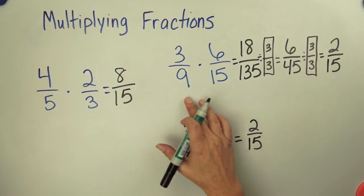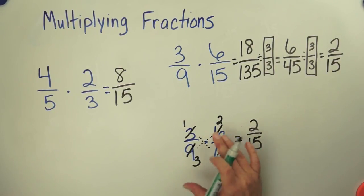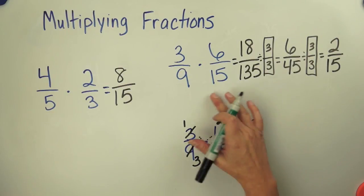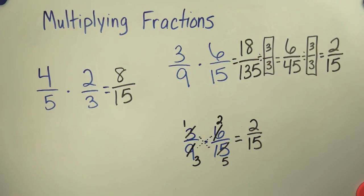And I also get 2 fifteenths if I multiply and then simplify. So in this case I have simplified basically before I multiplied and this time I simplified after I multiplied. Either way you get the same answer. That's the end of our lesson on multiplying fractions.